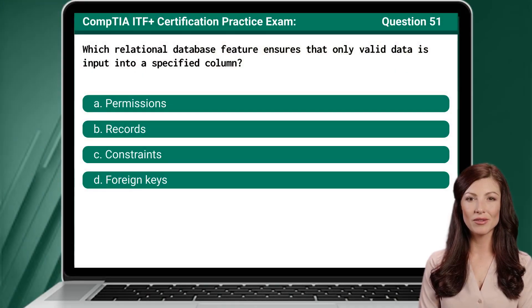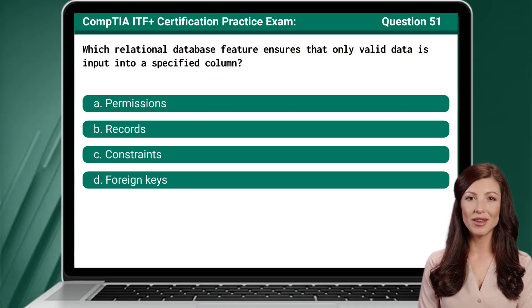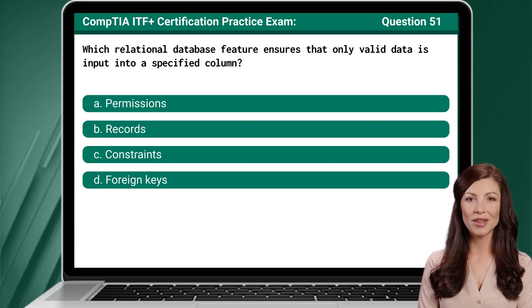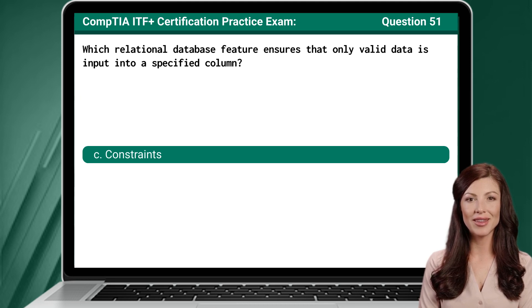Question 51. Which relational database feature ensures that only valid data is input into a specified column? The answer is C: Constraints.